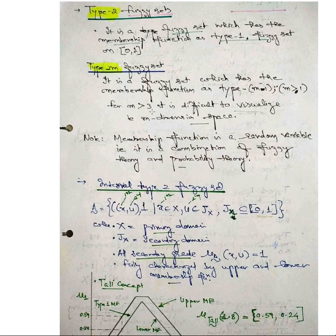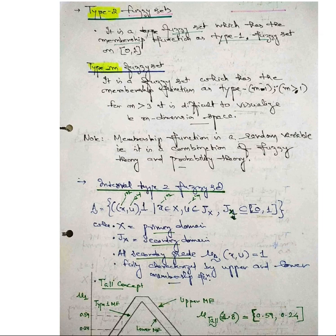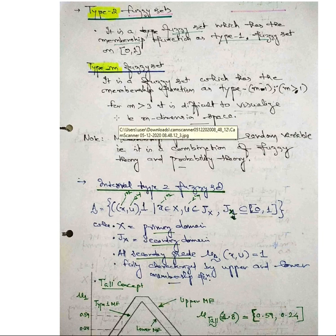For M greater than 3, under the class of a Type 1 membership function, to plot it on a figure is a little cumbersome. Up to Type 2 you can see the third dimension. When you go to Type 3, to represent that particular thing is a little tedious. The membership function is a random variable and it is a combination of fuzzy theory and probability theory.